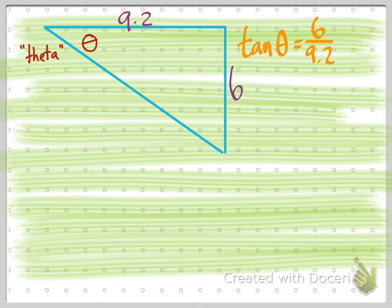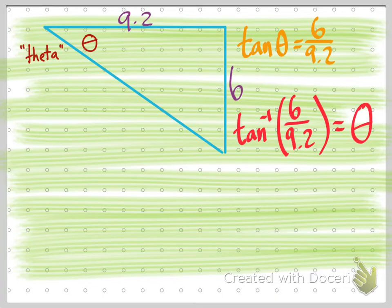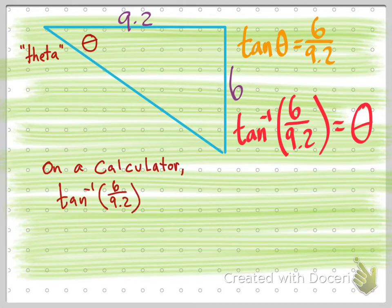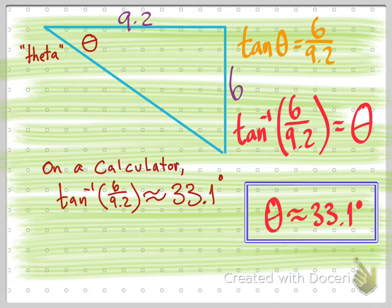All right, so the tangent of theta is 6 over 9.2, opposite over adjacent, and that means that the inverse tangent of 6 over 9.2 equals theta. So you just let your calculator take care of that, and what you get is about 33.1 degrees. And that's it. That's the answer.